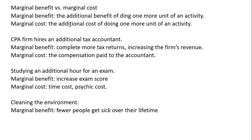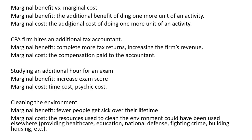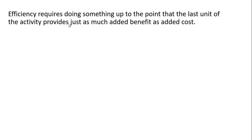Cleaning the environment: the marginal benefit is that fewer people will get sick or develop cancer over their lifetime. The marginal cost is that the resources used to clean the environment could have been used elsewhere — for more health care, more education, national defense, fighting crime, building housing. In economics, efficiency requires doing something up to the point that the last unit of the activity provides just as much added benefit as added cost. An efficient outcome is doing something up to the point where the marginal benefit equals marginal cost.